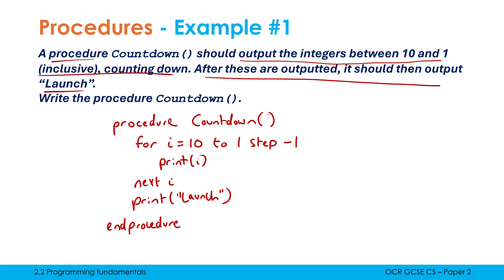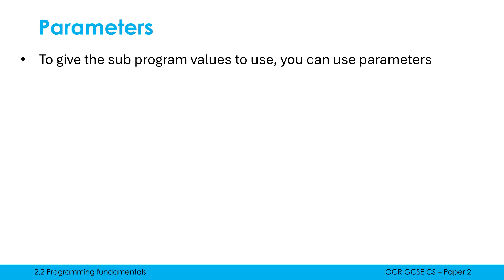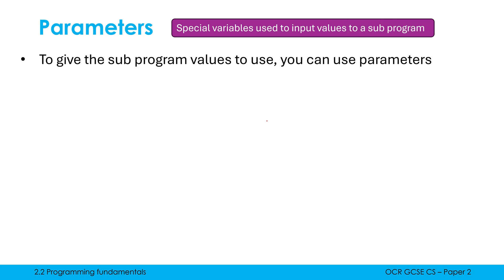These brackets are empty currently, however we can have things inside them. These things are called parameters, and we use parameters to give the subprogram values to use. More formally, parameters are special variables used to input values to a subprogram. They work like variables — just as we have the special variable I in a for loop, we also have parameters which are special for subprograms.